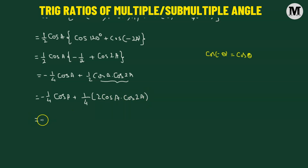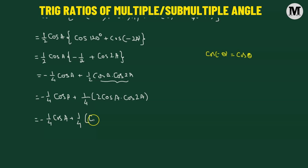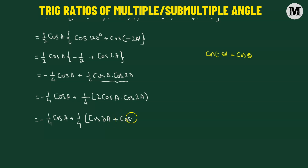So this equals negative one quarter of cosine of angle A, added to one quarter. Now let's apply the particular formula: here we have cosine of (A plus 2A), which gives us 3A, added to cosine of (A minus 2A), which gives us negative A.